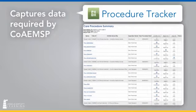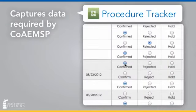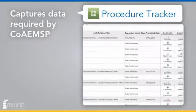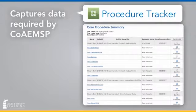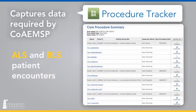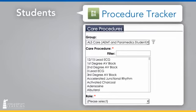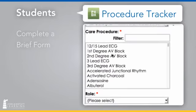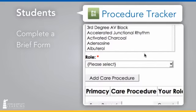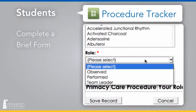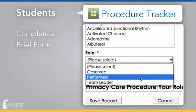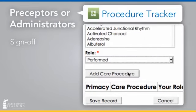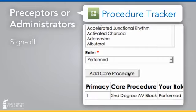To provide educators the ability to validate student patient encounters, Precept's procedure tracker captures the data required for both ALS and BLS patient encounters. Students simply complete a brief form for each patient encounter, and the entries are automatically tracked and routed to preceptors or administrators for sign-off.